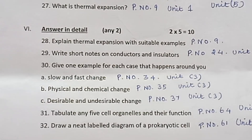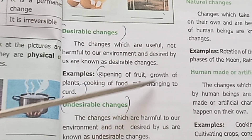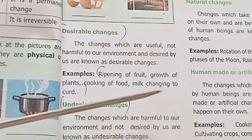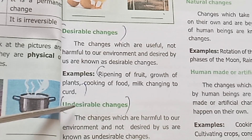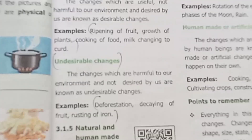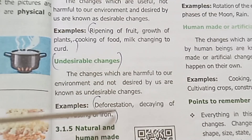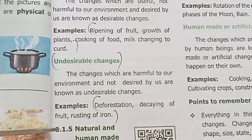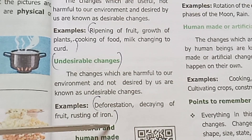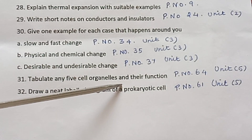Part C: Desirable and undesirable changes. Page number 37, Unit 3. Desirable changes: ripening of fruit, growth of plants, cooking of food, milk changing to curd. Undesirable changes: deforestation, decaying of fruit, rusting of iron.